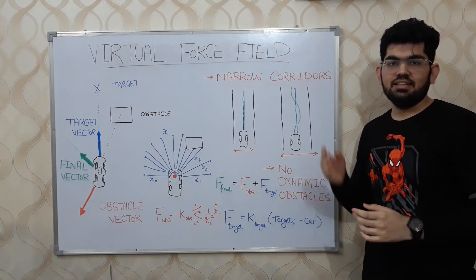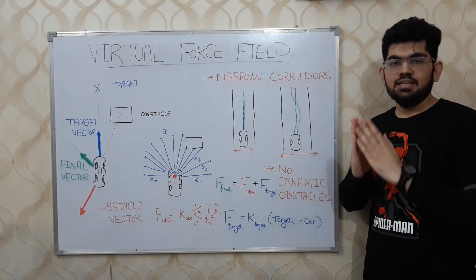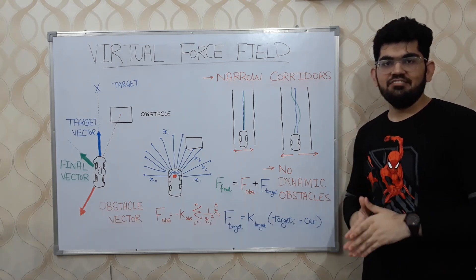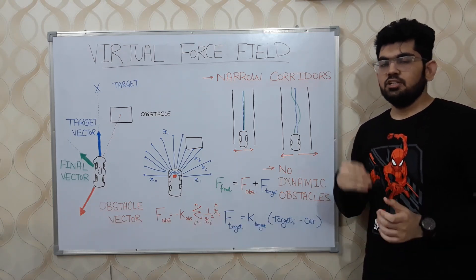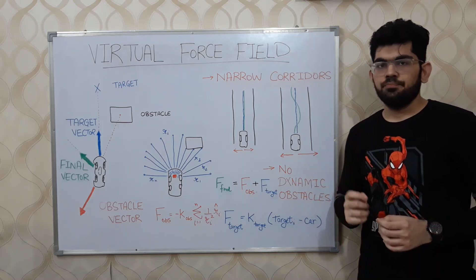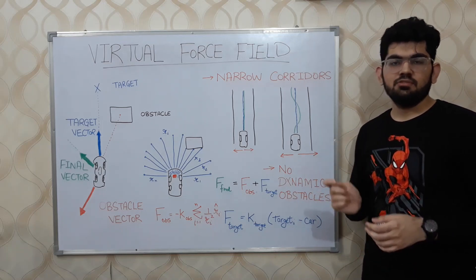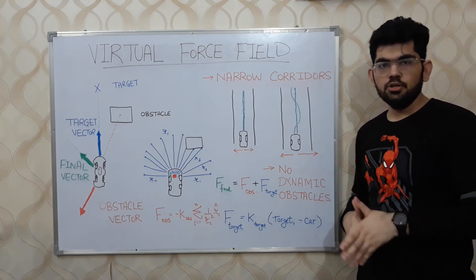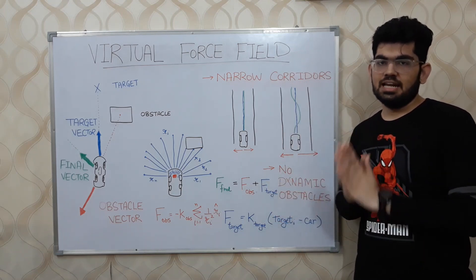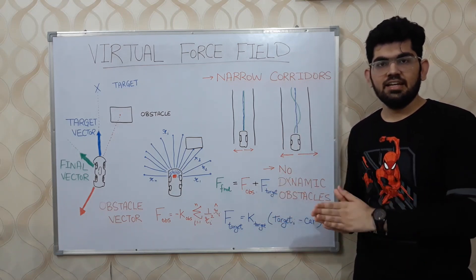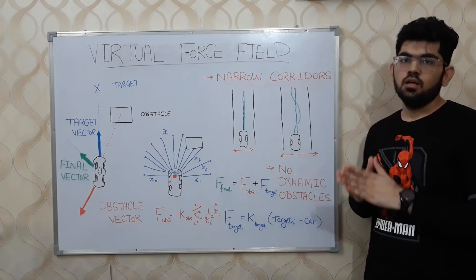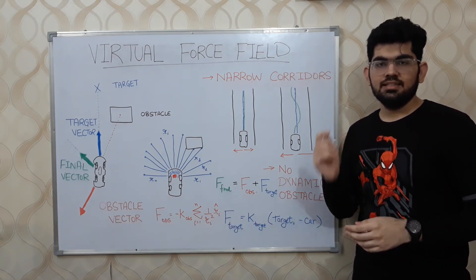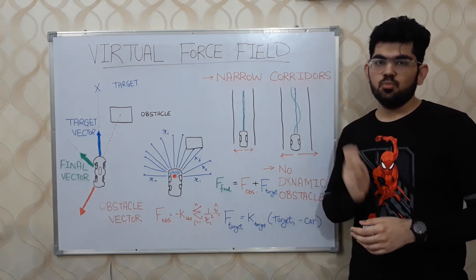The second major drawback of this algorithm is that it cannot avoid dynamic obstacles. It can very well avoid static obstacles — obstacles which do not move — but it has problems while avoiding dynamic or moving obstacles. Due to all these drawbacks, the virtual force field algorithm is never directly used in a real-world environment. However, its extension algorithm VFH — virtual force histogram — is quite widely used in real robots. Certain other extensions exist as well, like VFH plus and VFH star.